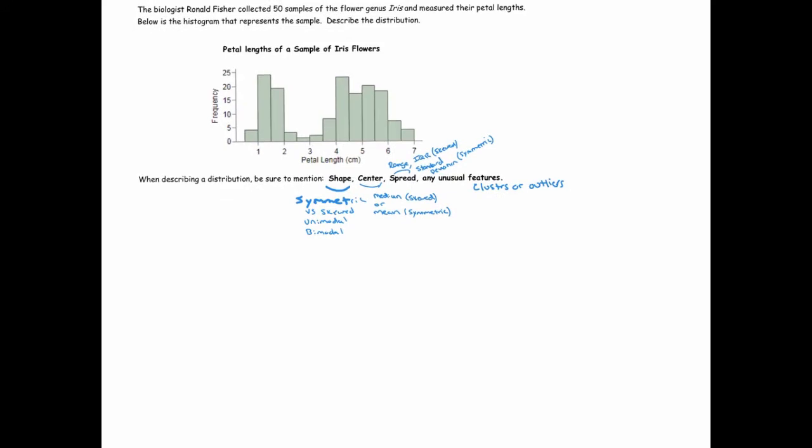Let me model how I might go about describing this distribution. The first thing I would point out is that this distribution looks like it has two humps, so I would describe it as bimodal. There's no particular order in which you have to describe the features, but it looks like there are two humps, so I'm going to start by indicating this distribution is bimodal with two main clusters.